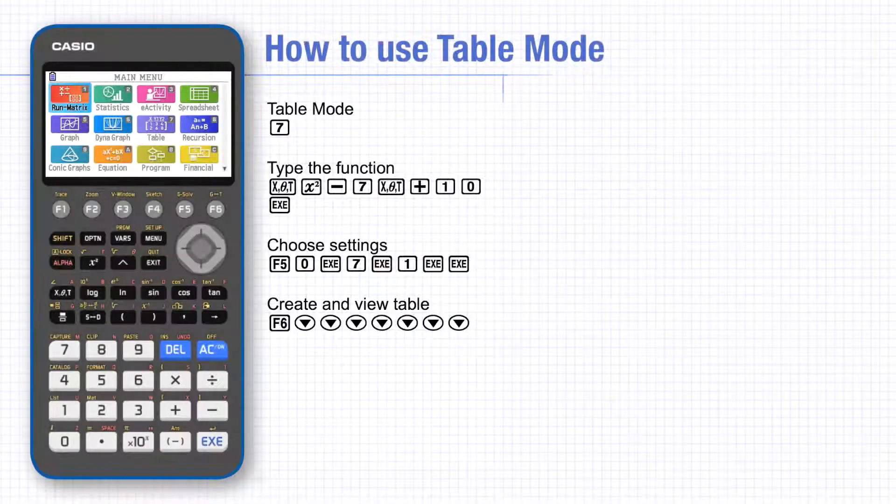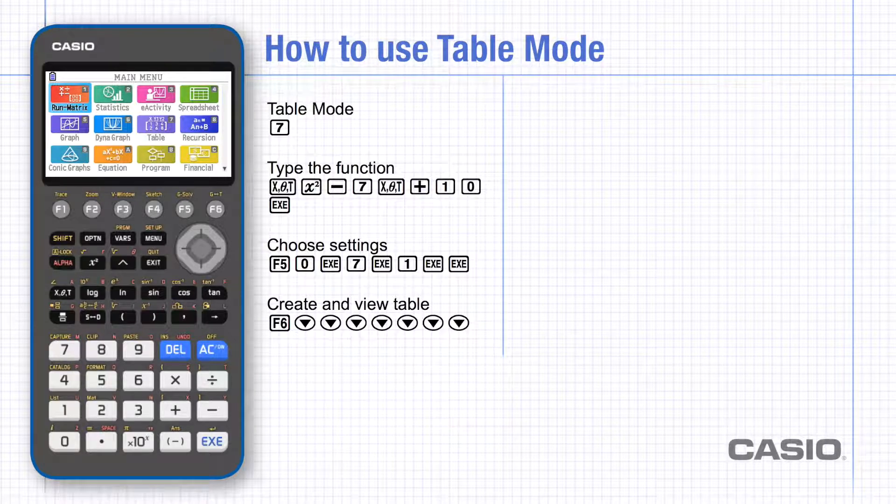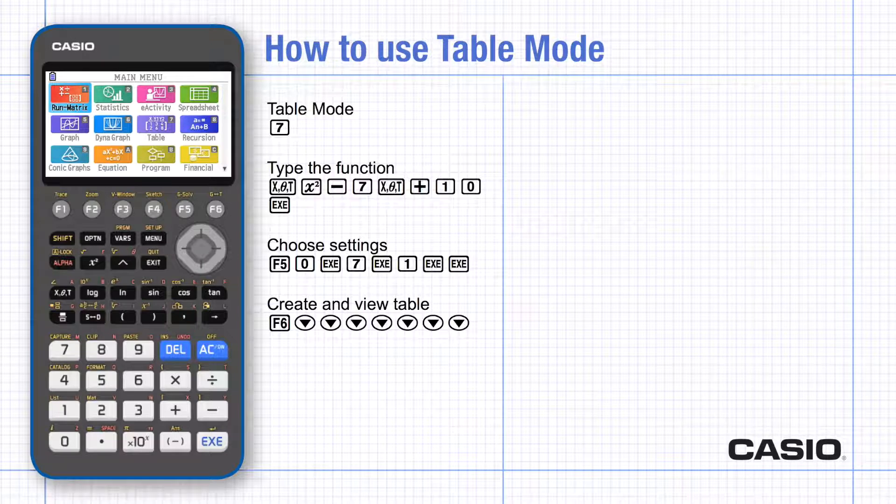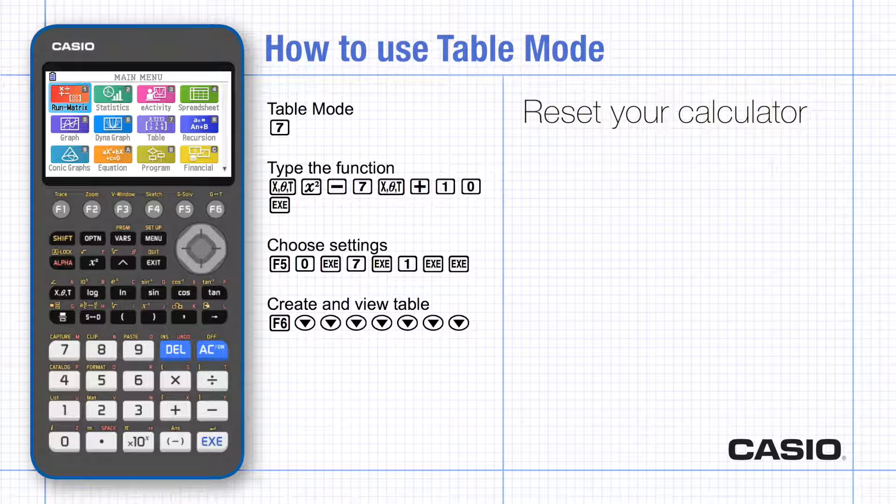In this tutorial we'll be looking at table mode, how to use it, and what it might be useful for. It creates a table of values for a function, which turns out to be surprisingly useful. It's essentially the same as table mode on the Casio scientific calculators but has the option to display the gradient as well as the Y coordinates in the table of values for up to two functions.